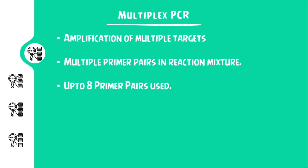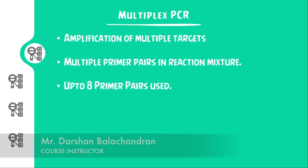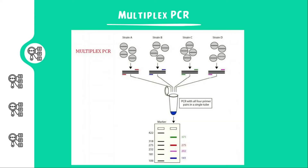The first type of PCR in this lecture is multiplex PCR. In this technique, multiple targets are amplified in a single run in a single PCR tube. Multiple primer pairs are used in the reaction mixture, and up to 8 primer pairs could be used. We need to make sure that the primers are proper and in accordance with the genes that need amplification.